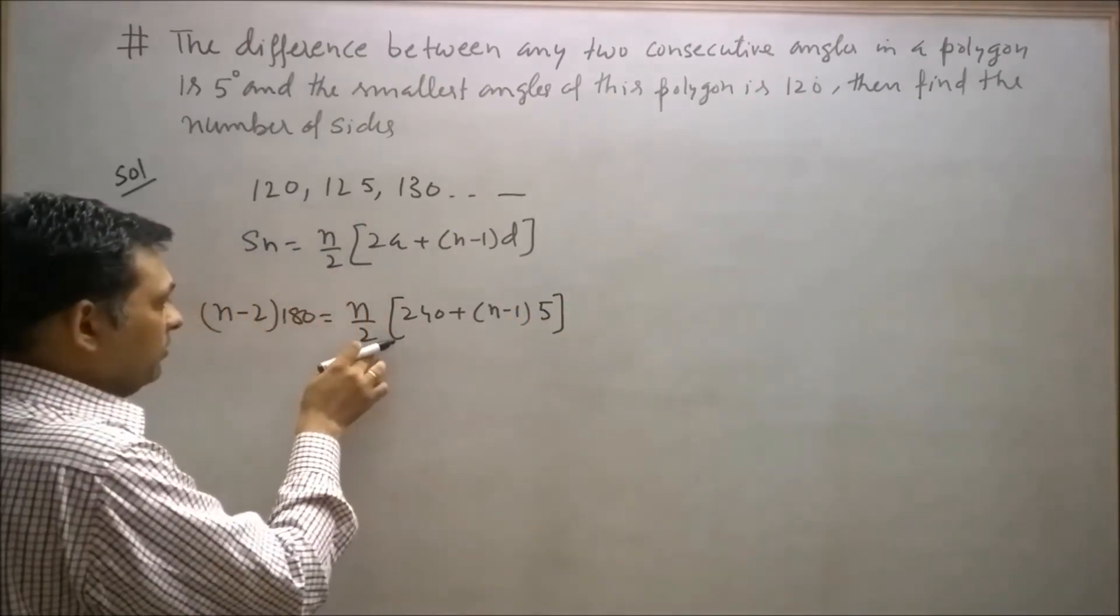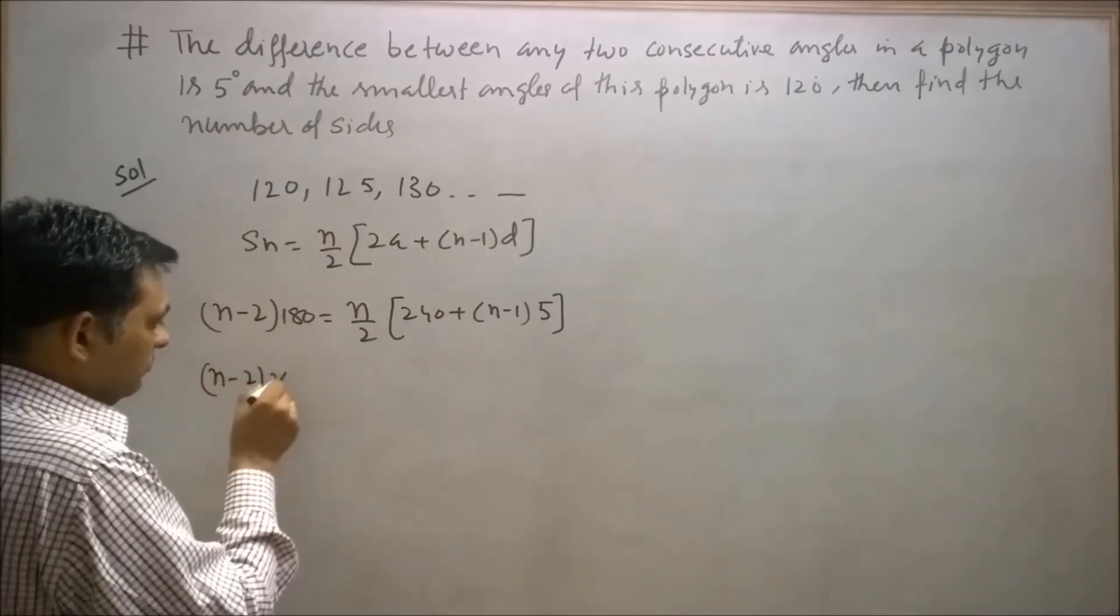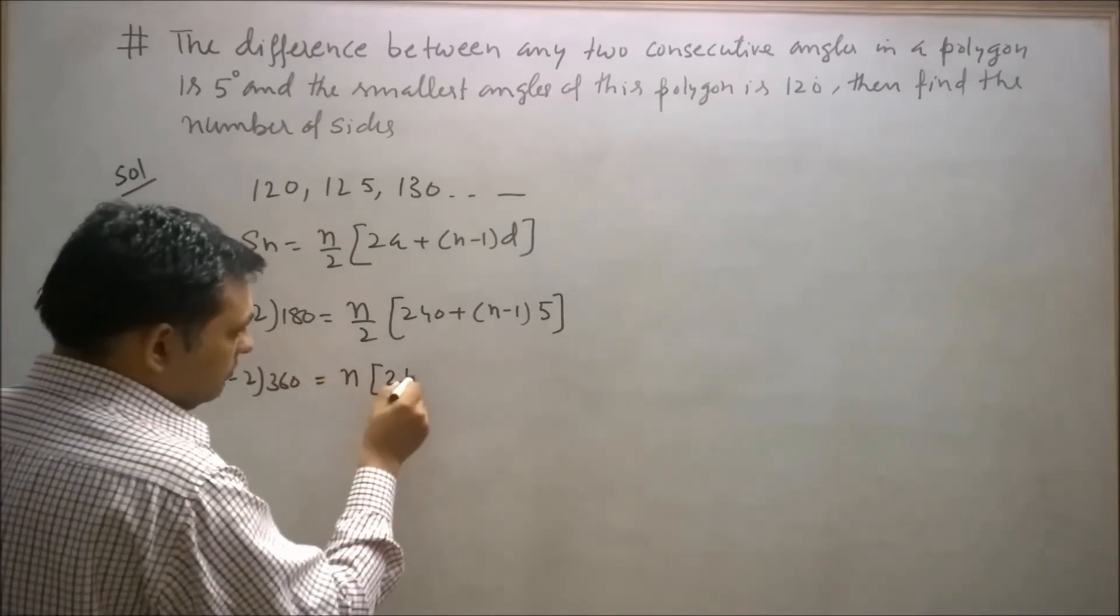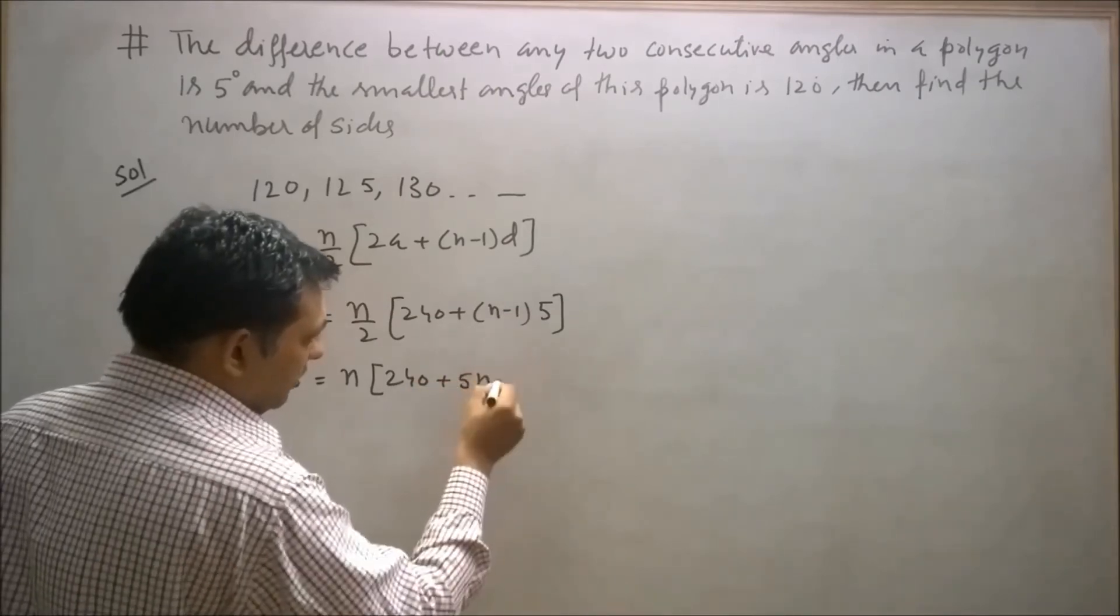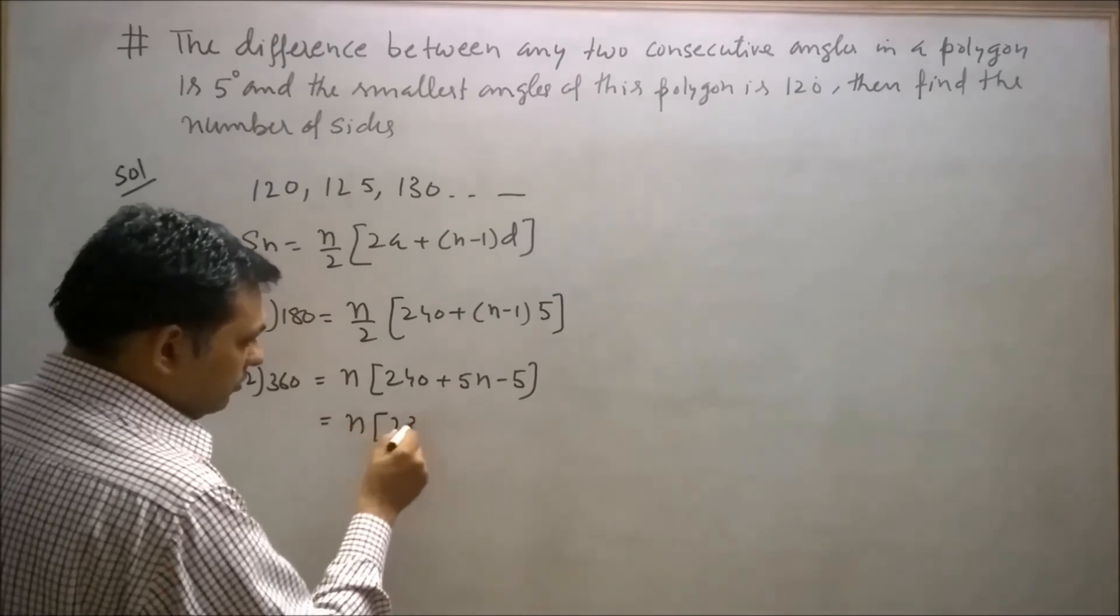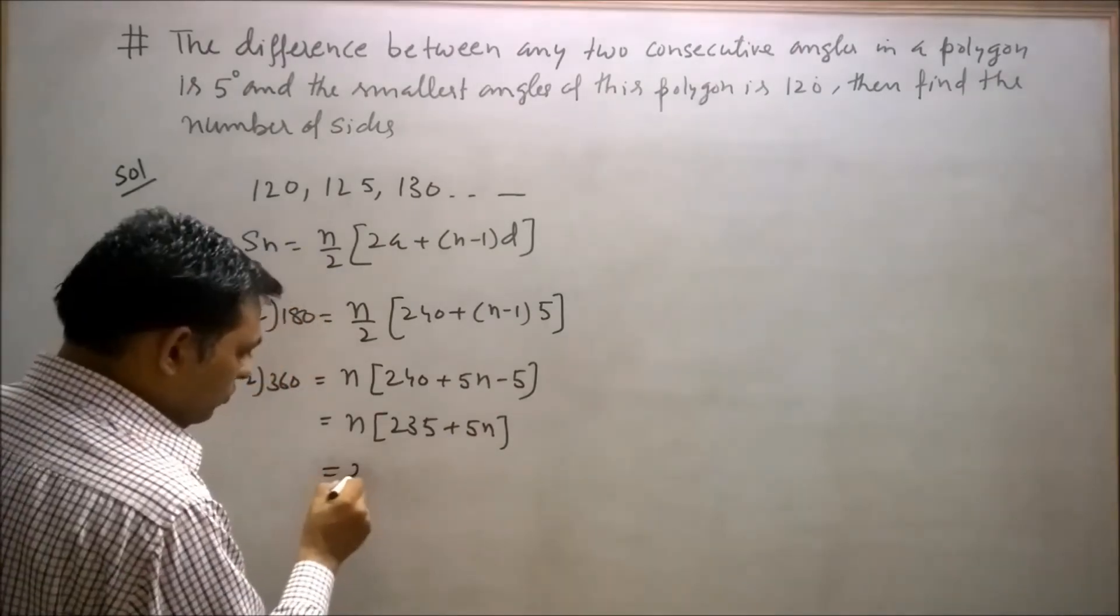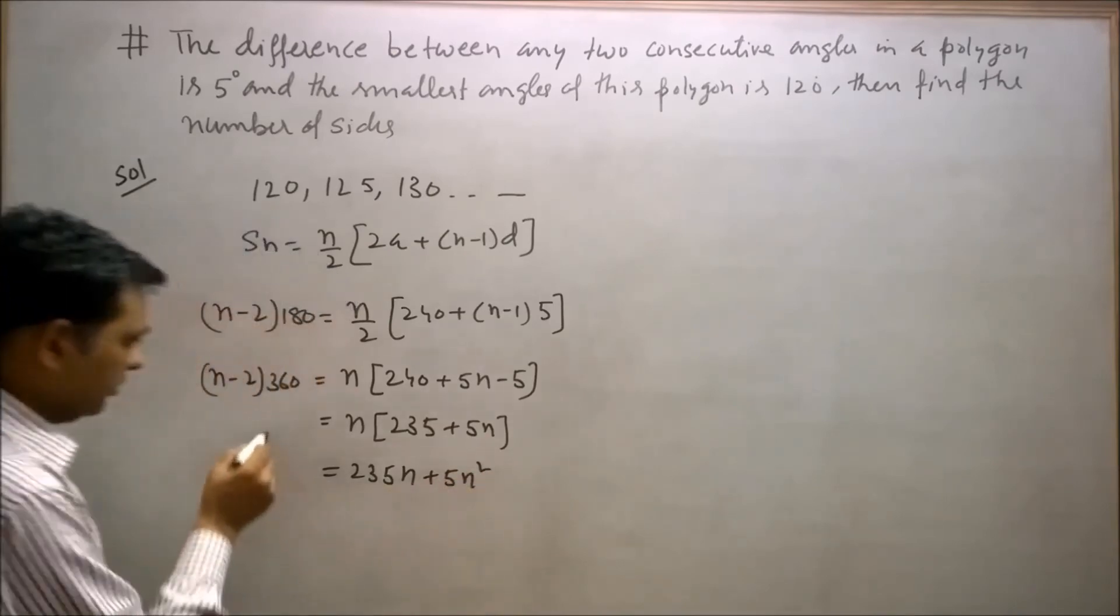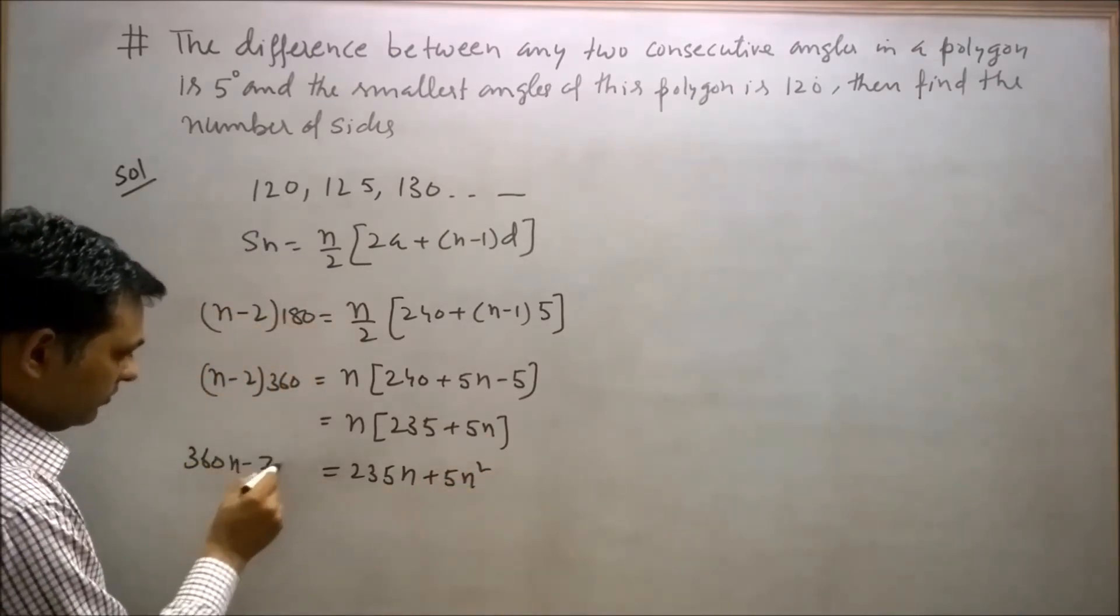After multiplying by 2, this becomes (n-2) × 360 = n[240 + 5(n-1)] = n[235 + 5n].